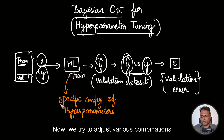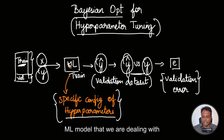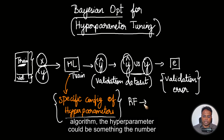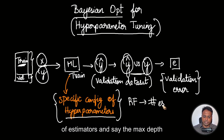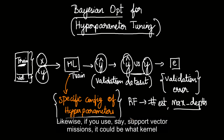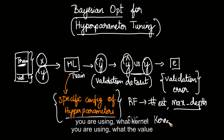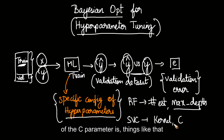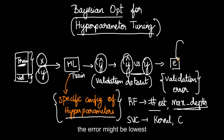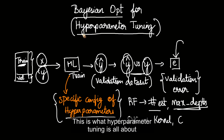We try to adjust various combinations of the hyperparameters of whichever ML model we are dealing with. For example, if we are dealing with a random forest algorithm, the hyperparameters could be something like the number of estimators and the max depth. There could be other parameters also. Likewise, if you use support vector machines, it could be what kernel you are using, what the value of the C parameter is. For a specific value of these hyperparameters, the error might be lowest — this is what hyperparameter tuning is all about.